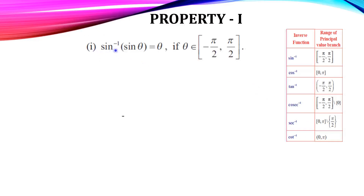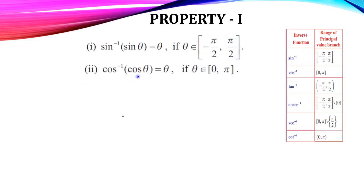For cot inverse, open interval (0, π). Now Property 1: sin inverse of sin θ equals θ — sin inverse and sin cancel, giving θ. This θ value must lie within the range, that is θ belongs to [−π/2, π/2]. For cos inverse of cos θ = θ, this θ must belong to [0, π].